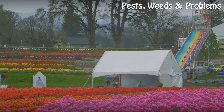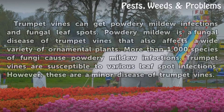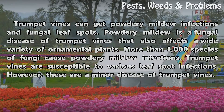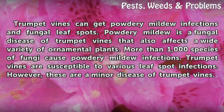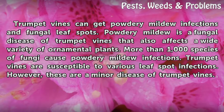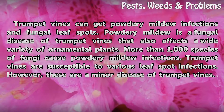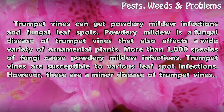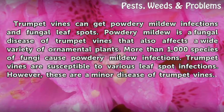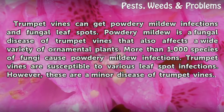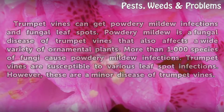Types. Trumpet Vines can get powdery mildew infections and fungal leaf spots. Powdery mildew is a fungal disease of trumpet vines that also affects a wide variety of ornamental plants. More than 1,000 species of fungi cause powdery mildew infections. Trumpet Vines are susceptible to various leaf spot infections; however, these are a minor disease of trumpet vines.